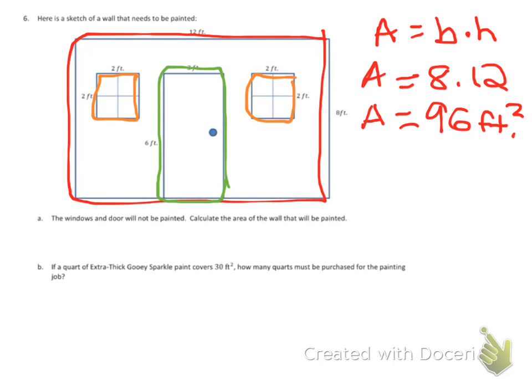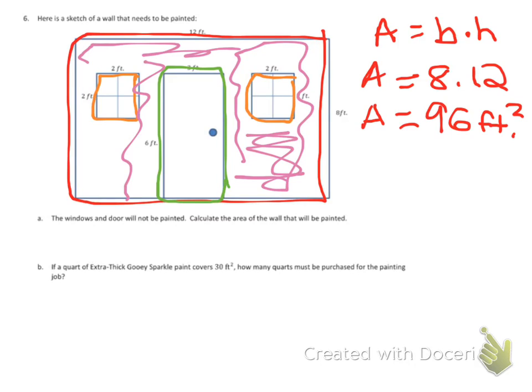So they're painting this area, but they're not going to be painting the green parallelogram or the two orange squares. So we need to calculate their area and subtract that out of this total area that we just found. That will tell us how much paint we need.